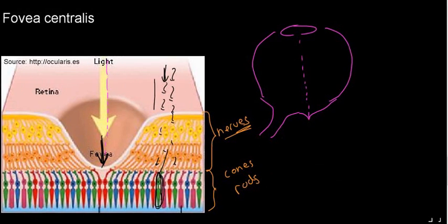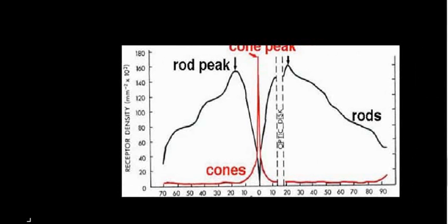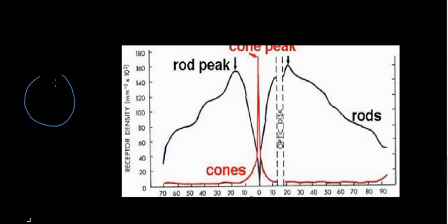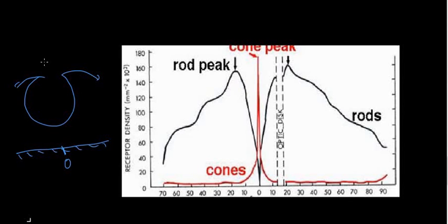I'd like to interpret the distribution graph before finishing this segment. The x-axis shows location: if I take the retina and lay it flat, the zero point is the fovea — the optical axis. So I'm asking about distribution relative to the center.